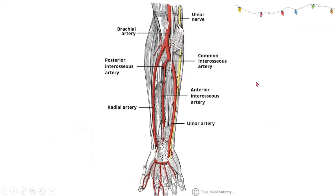And we can see this image. The brachial artery is divided into the radial artery and ulnar artery. We can see the common interosseous artery, from which the anterior interosseous artery and posterior interosseous artery arise. These arteries are located on the interosseous membrane.